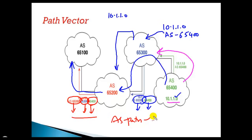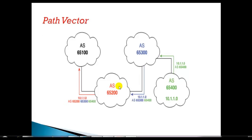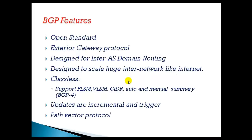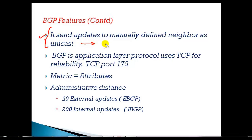Whenever BGP carries a routing update, it carries the autonomous system path information. This is very useful especially for the loop prevention mechanism, which will be discussed in more detail in upcoming sections. That's why we call it a path vector protocol — it carries the path information showing which autonomous system hops the route has traversed. BGP sends updates to manually configured neighbors using unicast.